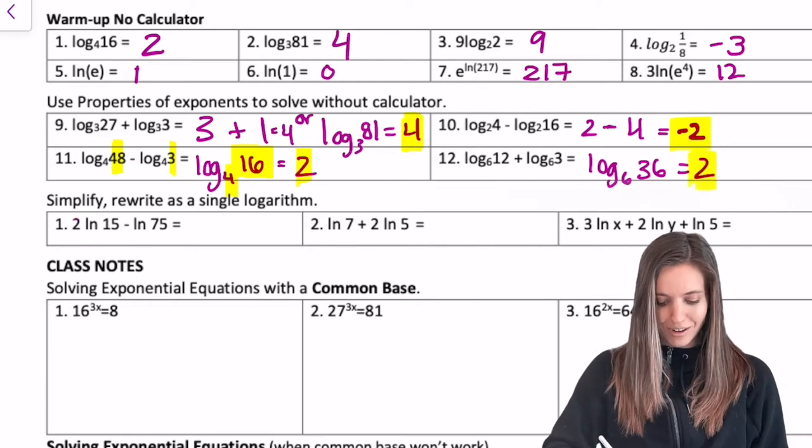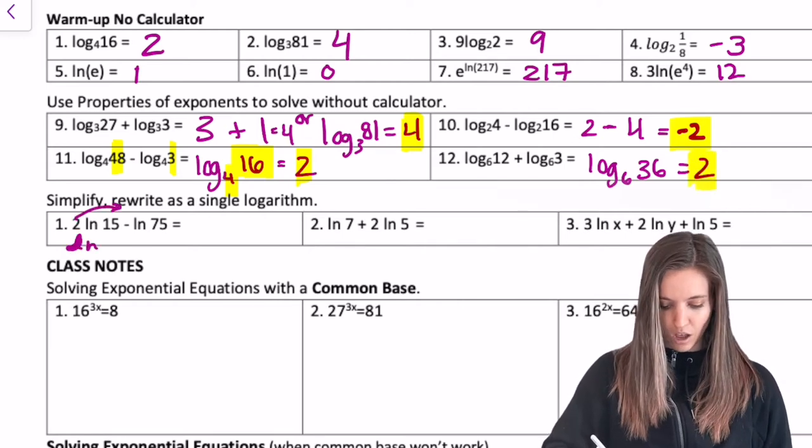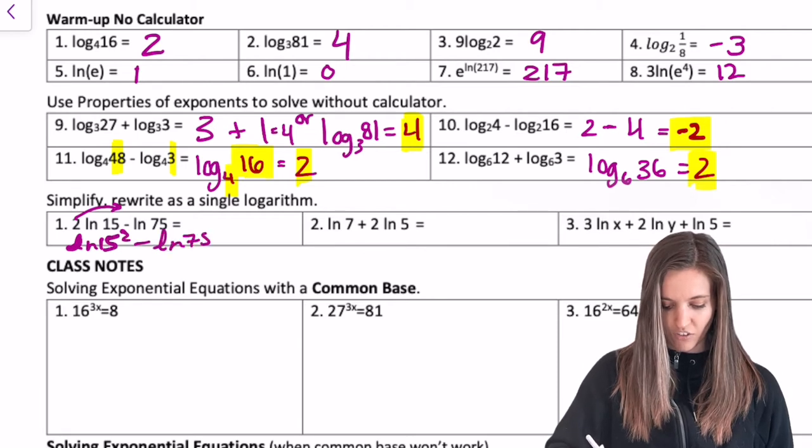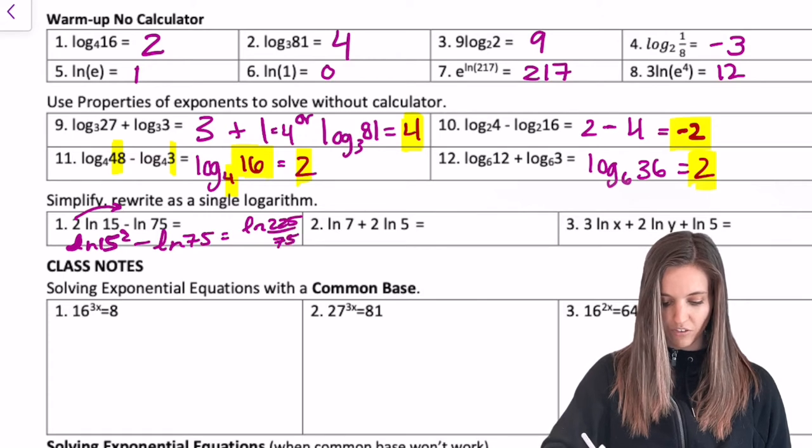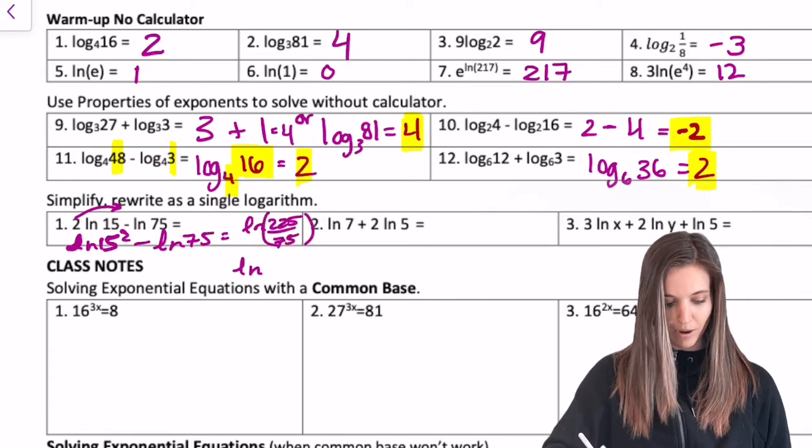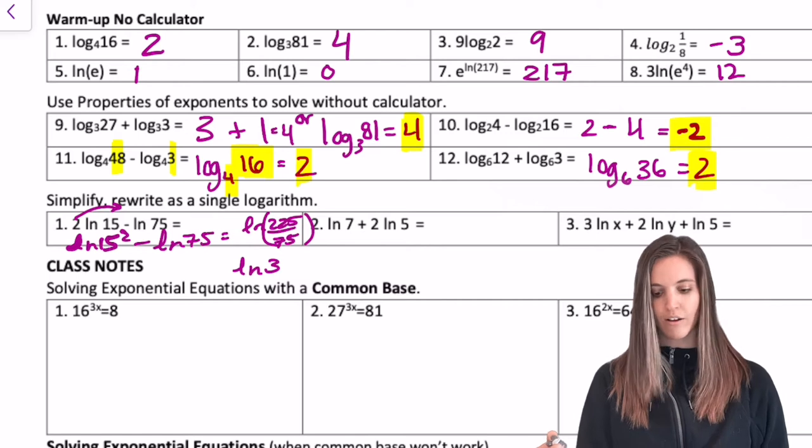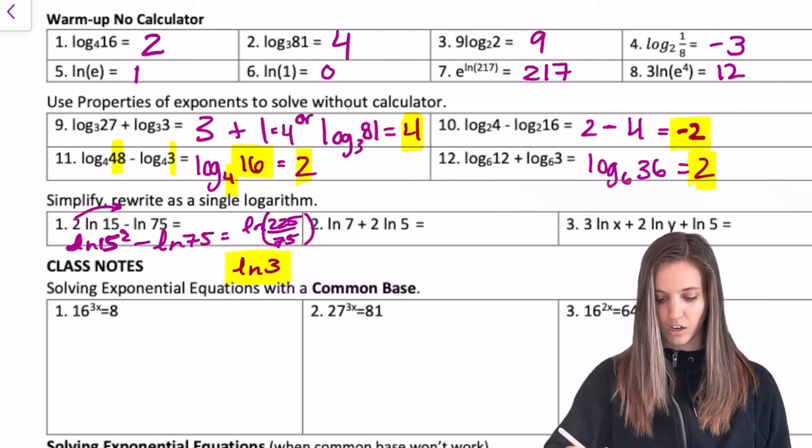So for this first one, take care of that power first. Natural log of 15 squared minus the natural log of 75. So natural log of 225 divided by 75. 225 divided by 75 is 3. Natural log of 3 is my final answer. Go try the rest of those.